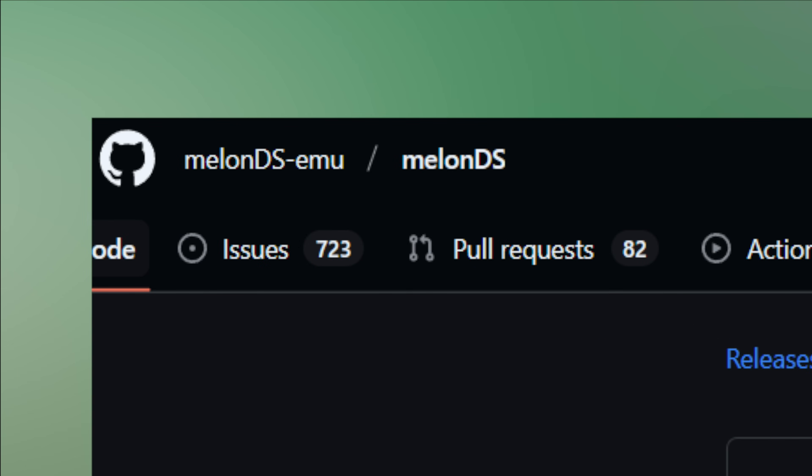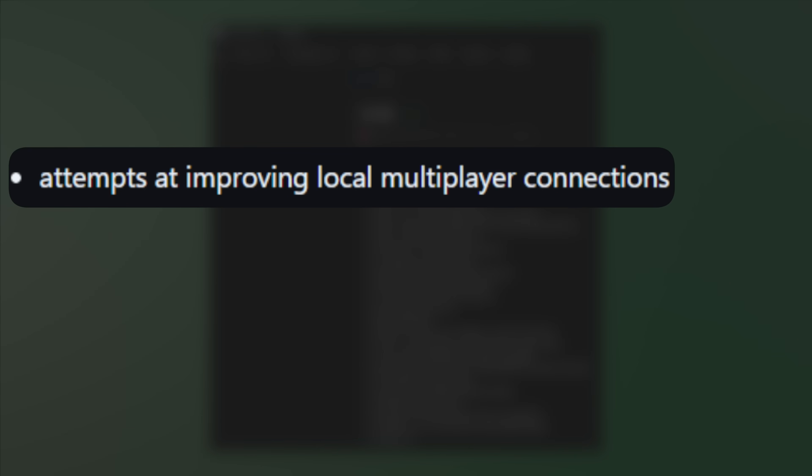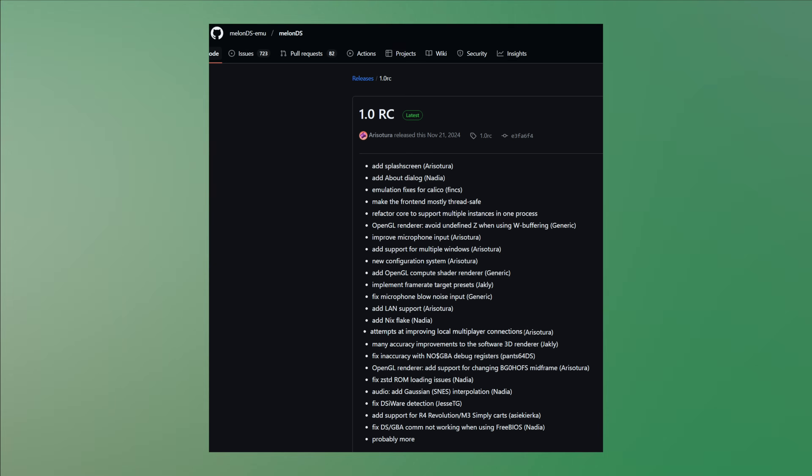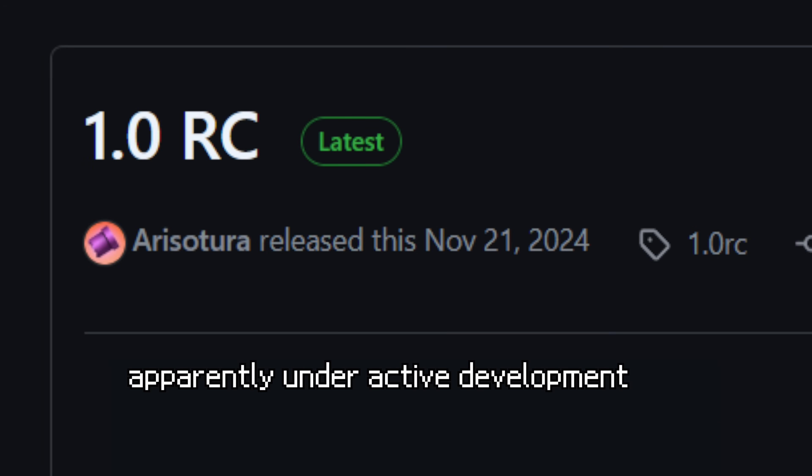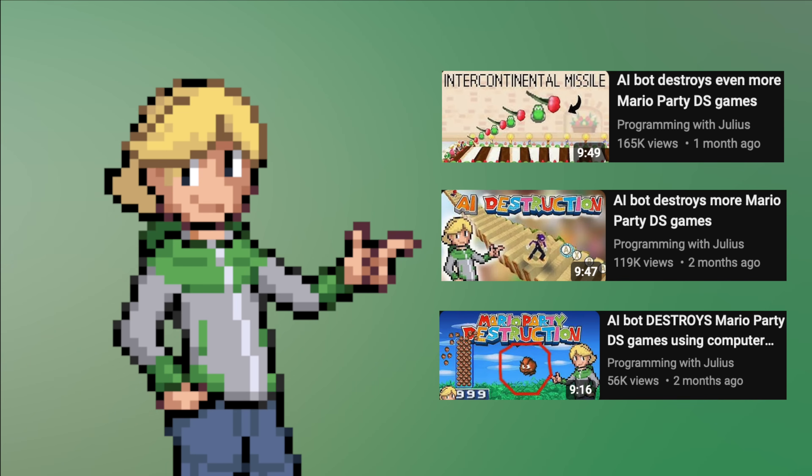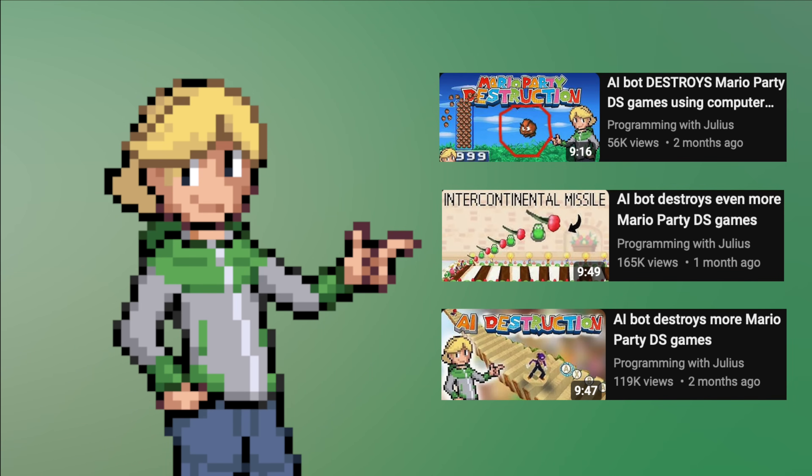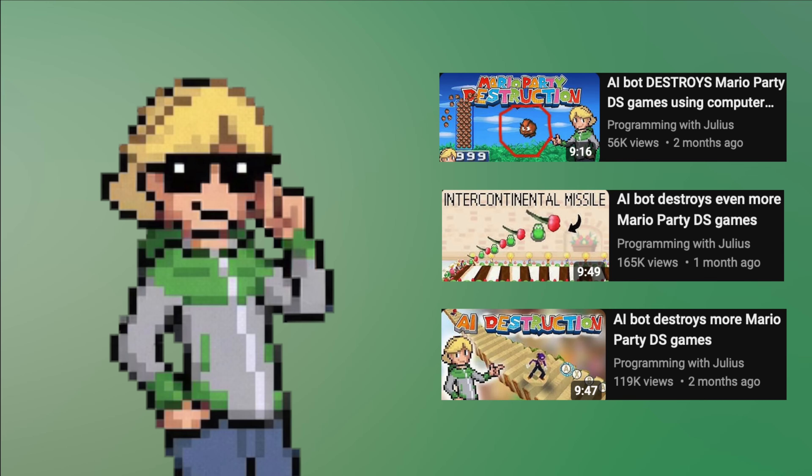When I'm done with all games I'm planning a big special episode where I program a board AI and actually let it play a full game. Maybe by then the Melon DS team has figured out how to make local multiplayer stable. Then I could even have multiple instances of the bot compete against each other. By the way these videos can be watched in any order so if you're a new viewer give the other ones a watch too. Anyway let's continue.